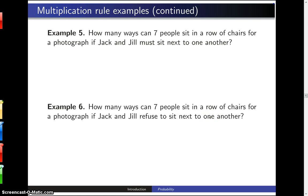Example 5 is how many ways can seven people sit in a row of chairs for a photograph if Jack and Jill must sit next to one another?